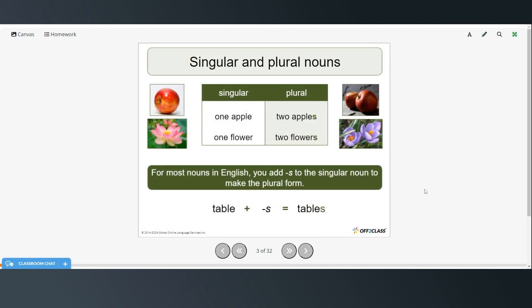Alright, so singular and plural. Singular means one, so one apple, one flower. Plural means more than one, so we have two apples, two flowers. So for most nouns in English you add an S to the singular noun to make the plural form. So table plus S equals tables.